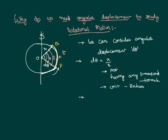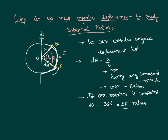If the body completes one full rotation about the given axis, the angular displacement — generally denoted by dθ — is 360 degrees, or in SI units, 2π radians. Therefore, to study rotational motion we cannot depend on displacement, because each particle has a different displacement. We depend on angular displacement because all particles of the body have the same angular displacement.